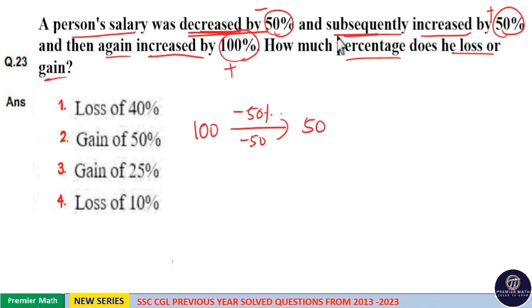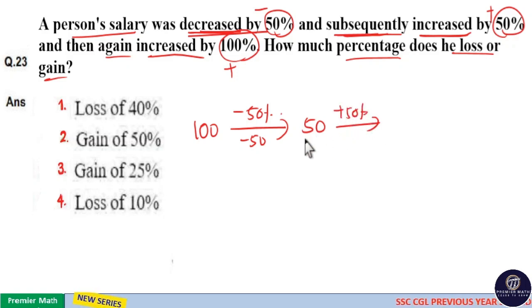Now again this is increased by 50%. Now 50% increment on this 50 means 50% of 50 is equal to 25 rupees. So 50 plus 25, 75 rupees is the current salary.